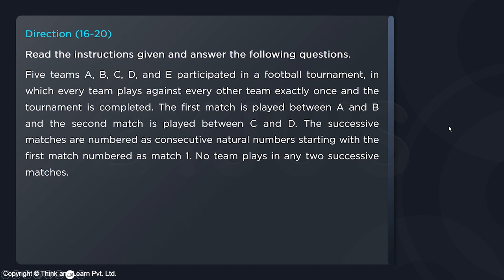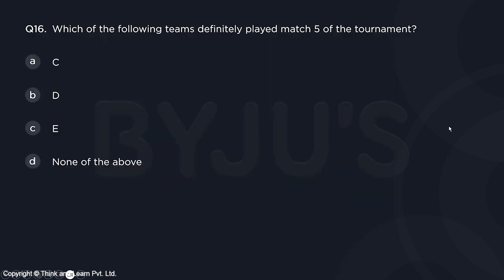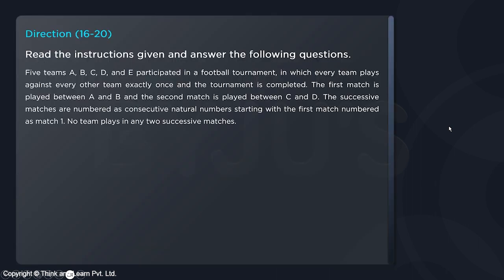The question says five teams A, B, C, D and E participated in a football tournament in which every team plays against every other team exactly once and the tournament is completed. The first match is played between A and B and the second match is played between C and D. The successive matches are numbered as consecutive natural numbers starting with match one. No team plays in any two successive matches. This is the only information given, and we have to make all possible cases through which this tournament can be completed.